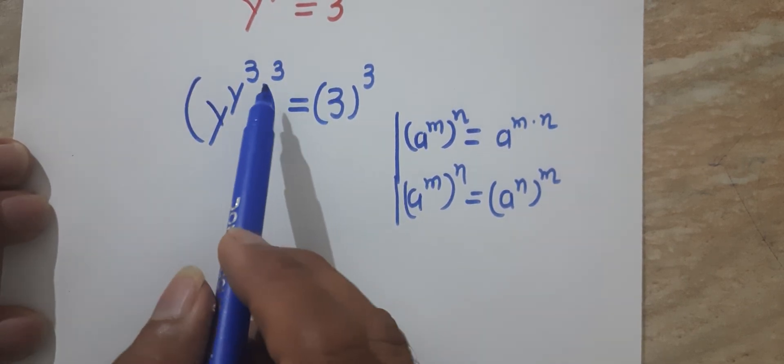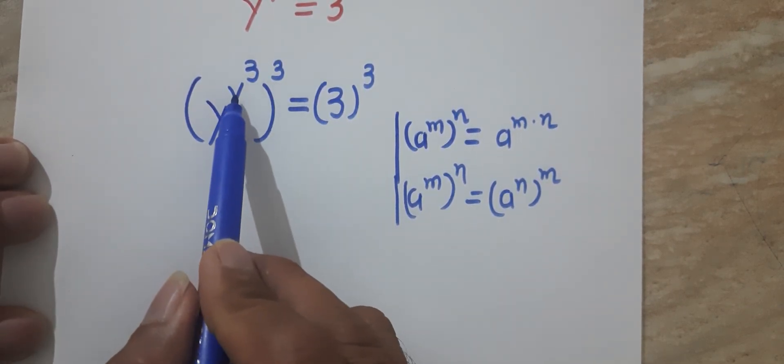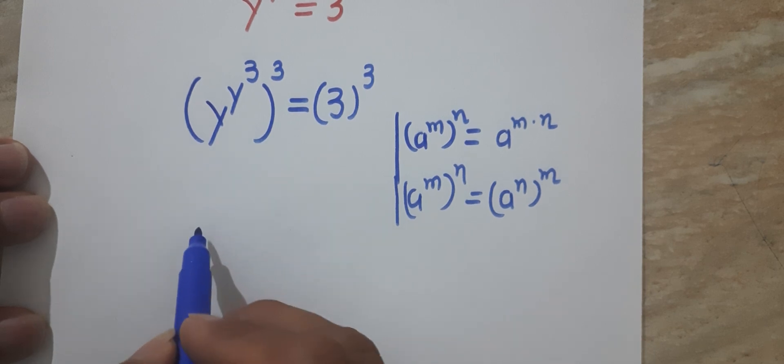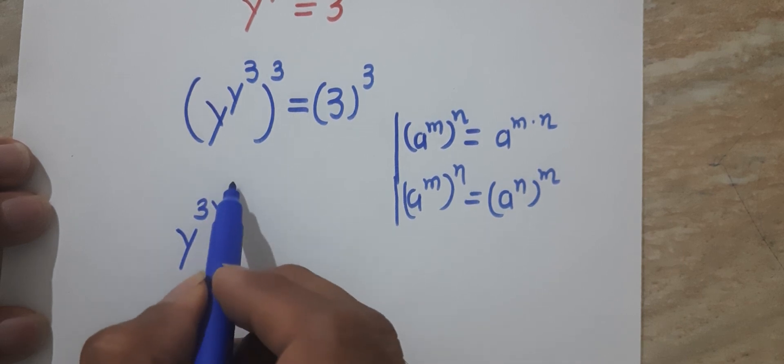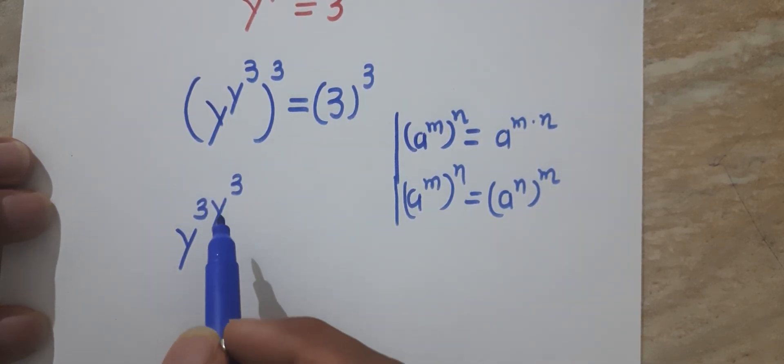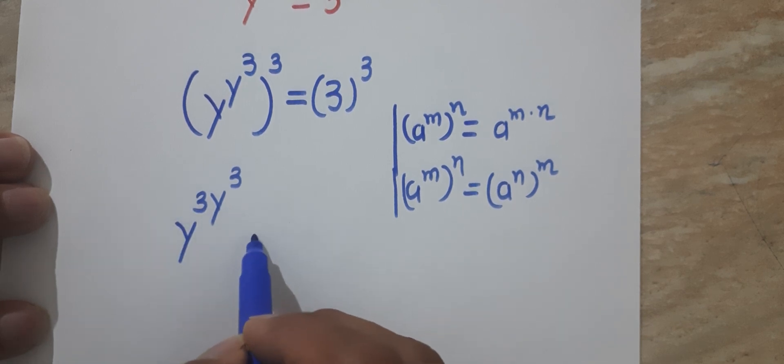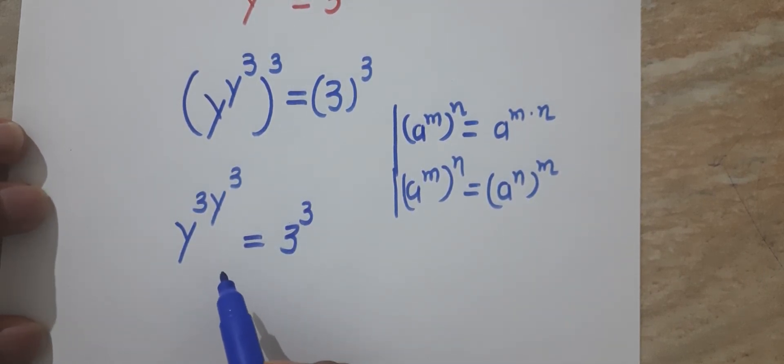We will multiply this 3 inside with y³. So now it will become y^(3·y³). On the right-hand side we have 3³.